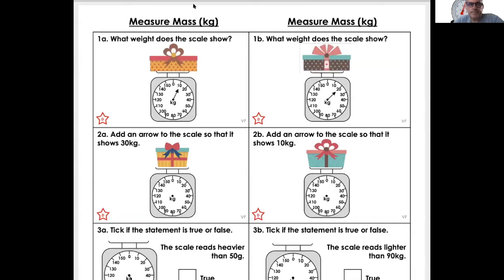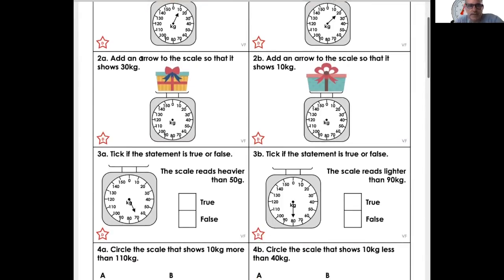Let's have a look at the question. What weight does the scale show when it's in kilograms? 20 kilograms. Add an arrow to the scale. So here is 30, 10, 20, 30.